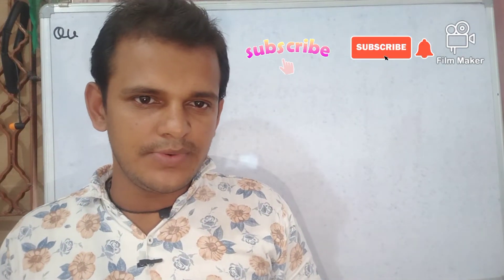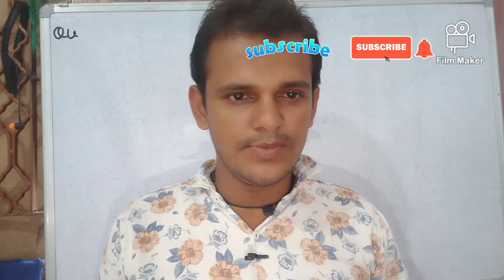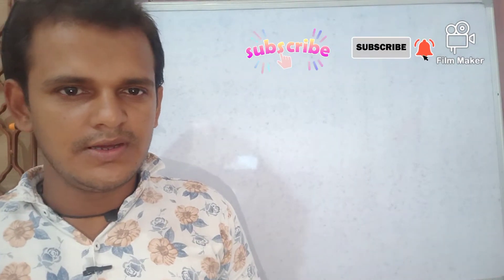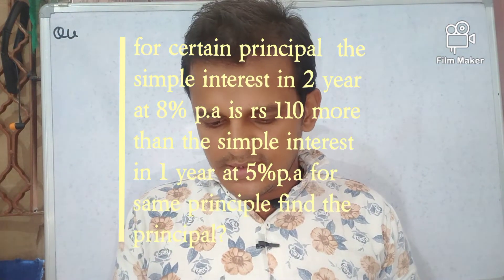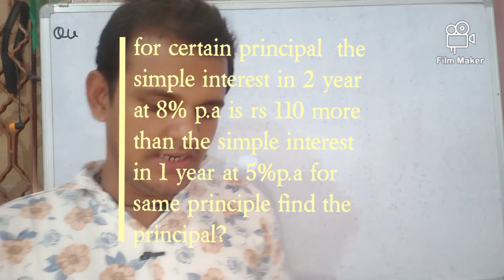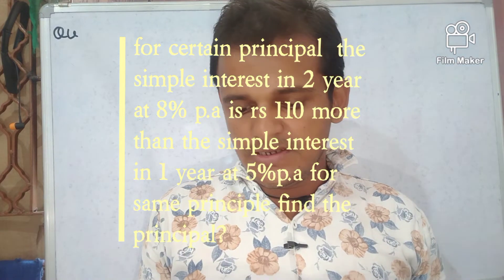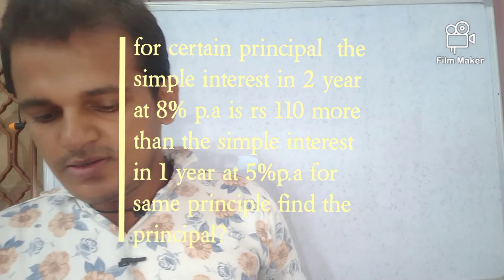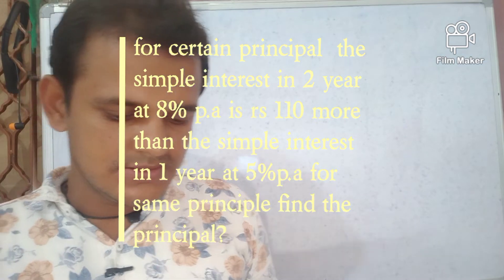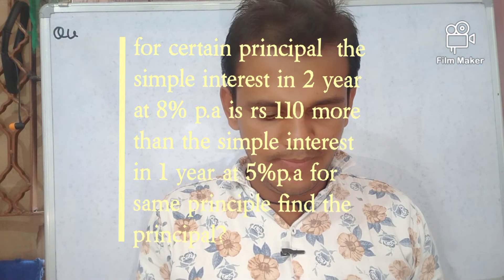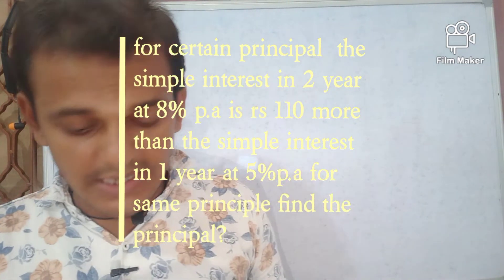Welcome to our YouTube channel One Job Discovery. The topic we're going to look at today is simple interest. So friends, read this question very carefully and solve it. Let's read it. For a certain principal, the simple interest in two years at eight percent per annum is Rs 110 more than the simple interest in one year at five percent per annum for the same principal.